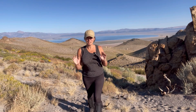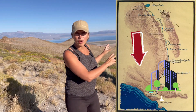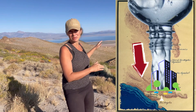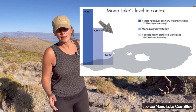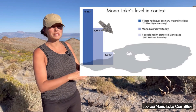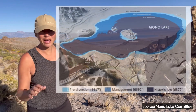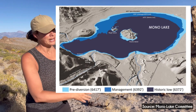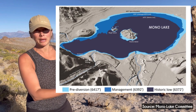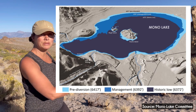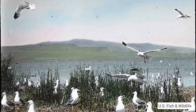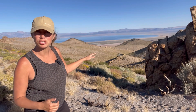In 1941, Los Angeles DWP began diverting water from the tributary streams that fed Mono Lake. This, of course, had pretty drastic consequences on the lake. Over the next 40 years, it caused it to drop by 45 vertical feet. It lost half of its volume. It doubled in salinity, and these factors obviously had bad consequences on the surrounding ecological systems. It was terrible for migratory and nesting birds, including the California gull, which suffered immensely from these changes.